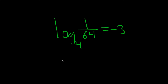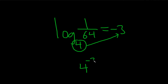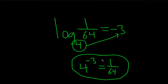Write an exponential form. You start by writing down the base, which is 4. So it's 4 to this number, so 4 to the negative 3, equals whatever you see here, so just 1 over 64. So 4 to this power equals this, and that would be what's called the exponential form.